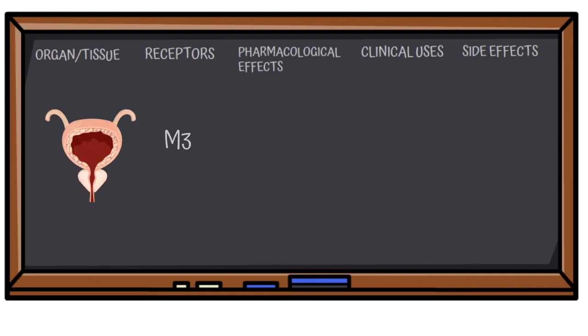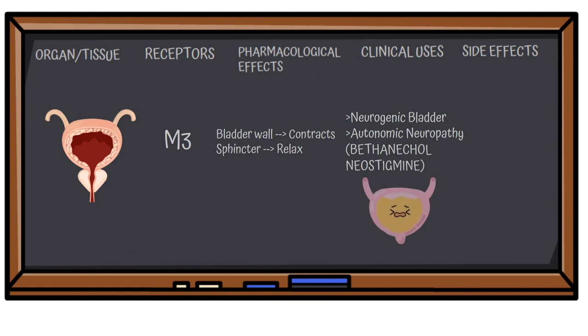Similarly, in the urinary bladder, M3 receptors are present which cause contraction of the detrusor, relaxation of the trigone, and increased voiding. This is useful in neurogenic bladder and autonomic neuropathy. Again, bethanechol and neostigmine are used. This can cause urinary incontinence in otherwise normal patients.